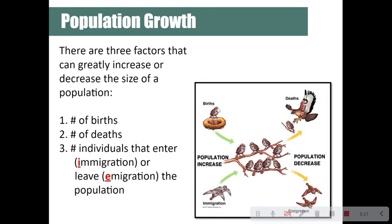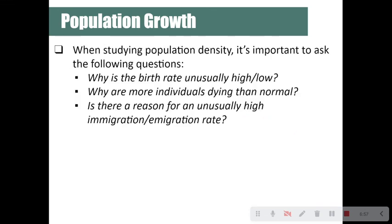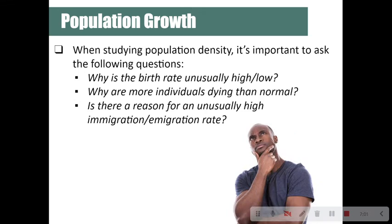Births and immigration lead to an increase in the population, while deaths and emigration lead to a decrease. If more individuals are being born than die, population size will increase. If the birth rate equals the death rate, the population remains stable. If the death rate is greater than the birth rate, the population will decrease. When studying population density, it's important to ask: why is the birth rate unusually high or low, why are more individuals dying than normal, and is there a reason for an unusually high immigration or emigration rate?